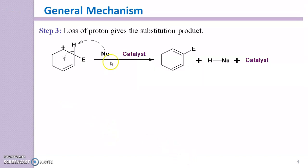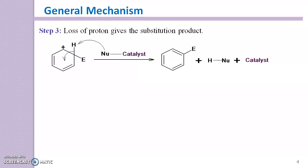In the loss-of-proton step, the hydrogen attached to the carbon — its bonding electrons return to the benzene ring, the proton is lost and attracted towards the nucleophile, and you get the substitution product along with the regenerated catalyst. The catalyst enhances the rate of reaction. In this general mechanism, step one is the slower step, which is the rate-determining step.